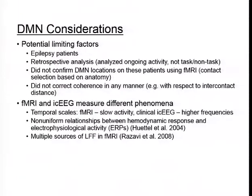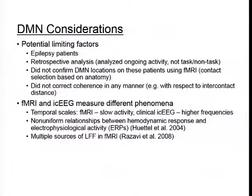More importantly, fMRI and intracranial EEG measure different phenomena. This can be seen in terms of temporal scales: fMRI measures very slow activity, whereas clinical intracranial EEG measures fast activity, so we don't have a good way of reconciling those two and tracking electrophysiological correlates of fMRI signals. There are also non-uniform relationships between the hemodynamic response and electrophysiological activity, as reported by Qtel et al. in 2004, suggesting the relationship may be more complex and dynamic than looking at corresponding frequencies.